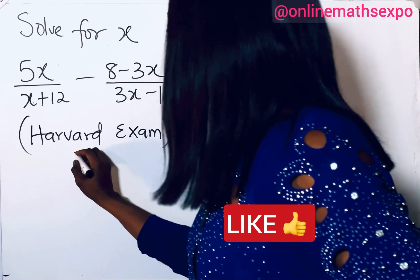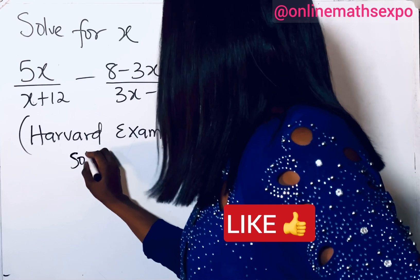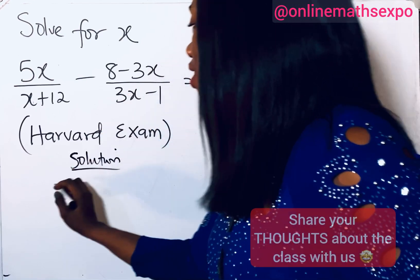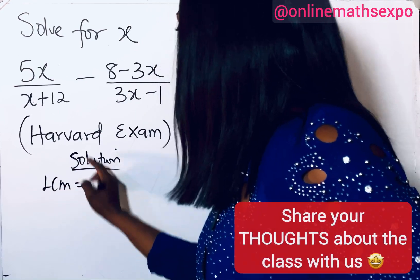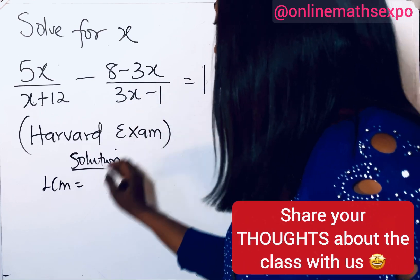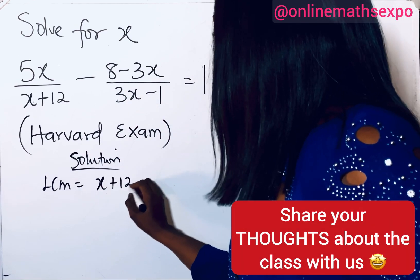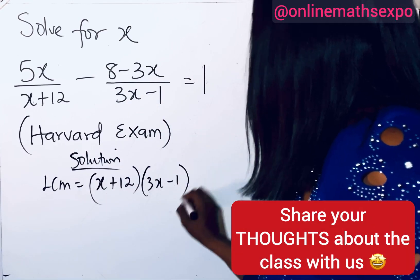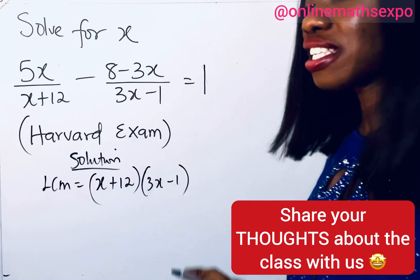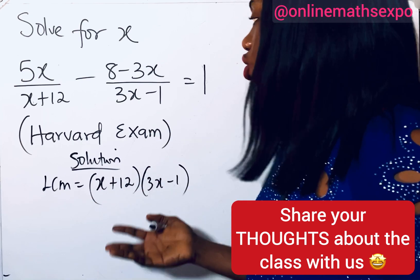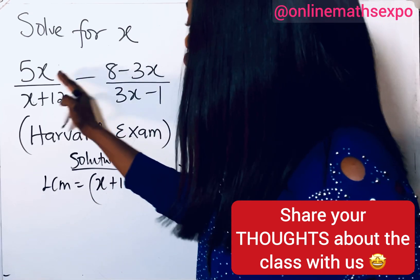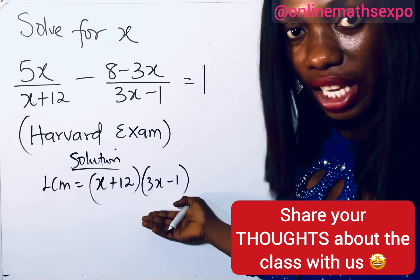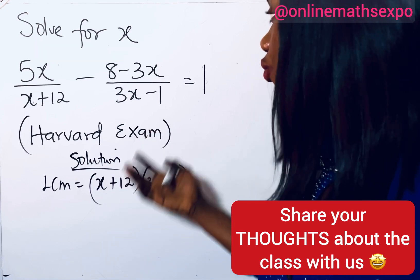To begin the solution, the LCM is simply the two expressions: (x + 12) and (3x − 1). To answer this, you are going to multiply each of these terms by this LCM.